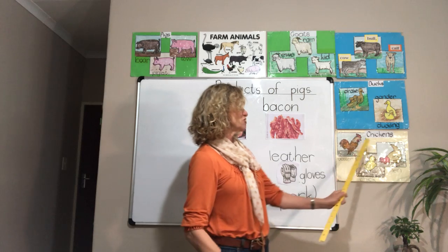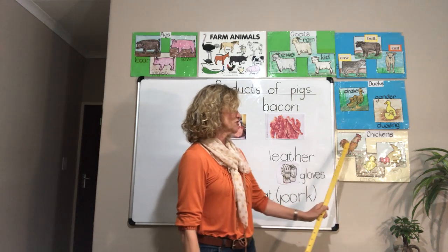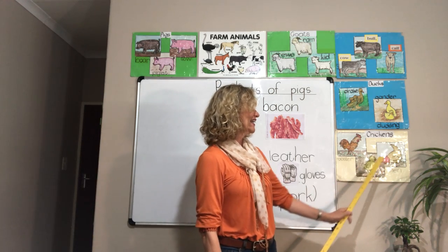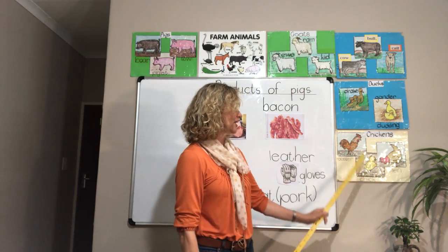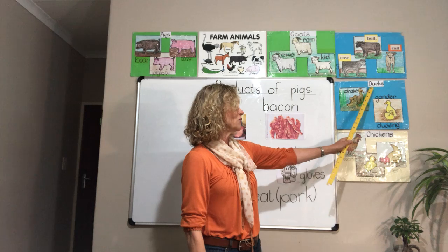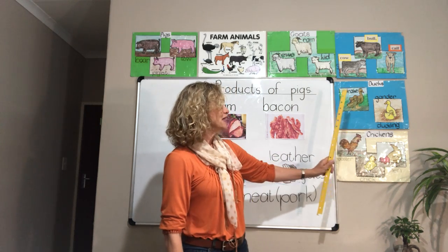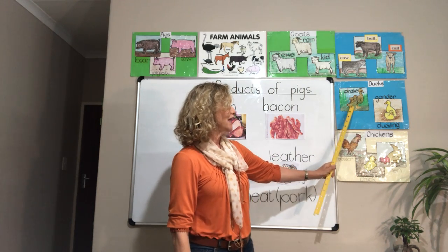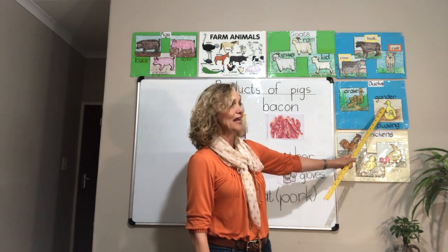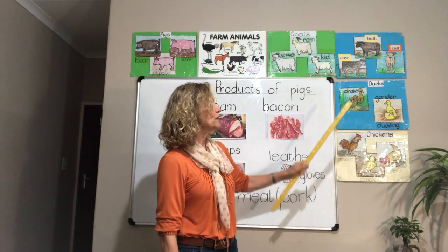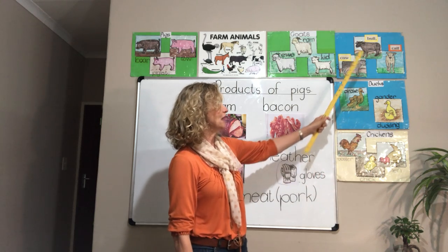We all know the chickens. There's the rooster, the hen, and the chick. Then we have the ducks or the geese — that's the drake, the gander, and the duckling or gosling.